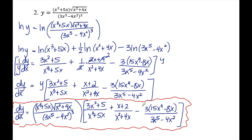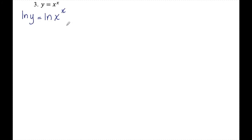Now let's look at two examples of case two, where there is a variable in both the base and the exponent. Example three: y equals x to the x. Since I have a variable in both the base and the exponent, I must use logarithmic differentiation. The first step is to take ln of both sides.